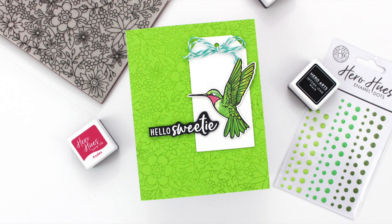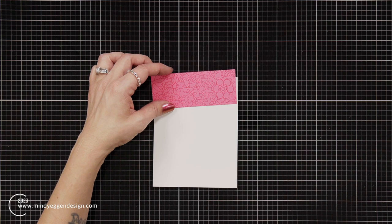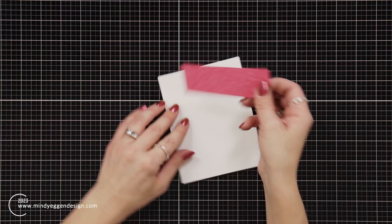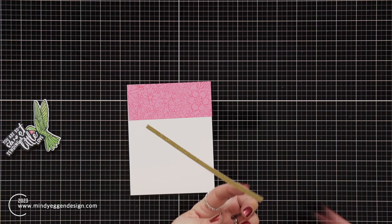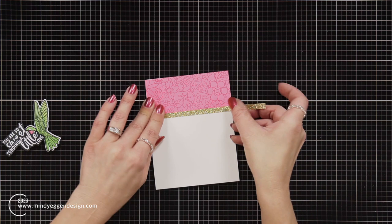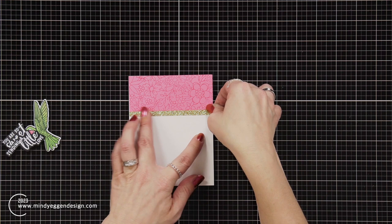Card number two is using that pink tone on tone. I trimmed off a little strip, about two inches, added some tape runner onto that, and attached it to a white card front cut to four and a quarter by five and a half. I also die cut some gold glitter cardstock into a quarter inch strip, added tape behind that, and added it right below my pink panel. Once I'm sure that's lined up straight, I can flip this over and trim off the excess of that gold glitter cardstock.